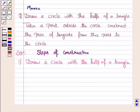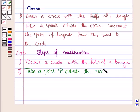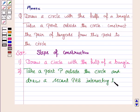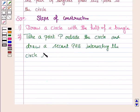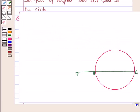We have drawn a circle with the help of a bangle. Now the second step is, take a point P outside the circle and draw a secant PAB intersecting the circle at A and B. So we have drawn a secant PAB and it intersects the circle at A and B.